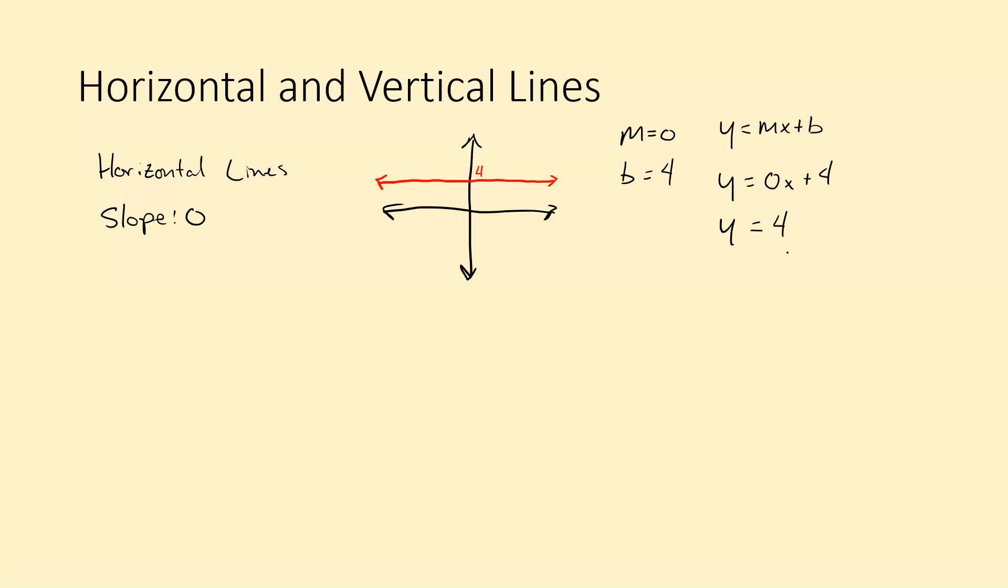And this is probably how you would most normally see a horizontal line written. This is the most simplified version. This is also correct. But that 0x is not necessary. So that is how you would write a horizontal line in slope intercept form.